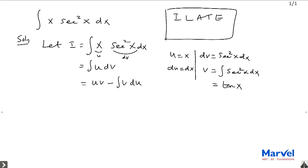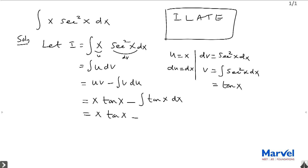So what is u v? u is x and v is tan x. Which is equal to x into tan x minus integral of v du — v equal to tan x and du equal to dx — so tan x into dx. Which is equal to x into tan x minus integral tan x. The integral of tan x is log cos x. So the result is x tan x plus log cos x plus c. This is the value of I.